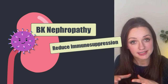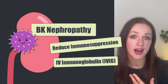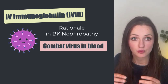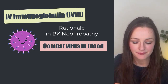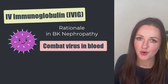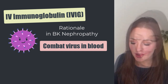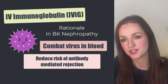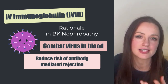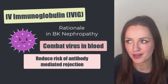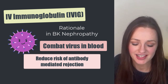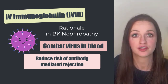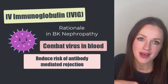For established BK nephropathy, we also give IVIG — high-dose intravenous immunoglobulin once a month. The rationale is twofold. First, the immunoglobulins can bind to and neutralise BK virus in the bloodstream, though this won't help BK virus already inside the kidney — we rely on the immune system for that. Second, IVIG can help mitigate the risk of rejection when we're dropping immunosuppression. By providing lots of exogenous antibodies, we signal the immune system to reduce its own antibody production, offering some protection against antibody-mediated rejection.